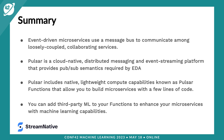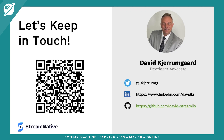In summary, event-driven microservices use a message bus to communicate between themselves, and Apache Pulsar is a cloud-native distributed messaging and event streaming platform that provides the pub/sub semantics that event-driven architecture needs. Furthermore, Pulsar includes a native lightweight compute capability called Pulsar functions that allows you to build microservices with just a few lines of code. As I've shown, you can easily add third-party machine learning libraries into your Pulsar functions to enhance your microservices with machine learning capabilities. Thank you for attending — scan the QR code for my personal page, follow me on Twitter, reach out on LinkedIn, and get the source code from my GitHub repo.